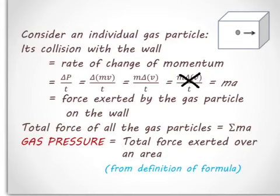And coming back here, the rate of change of momentum can be expressed as ΔP over time, which is Δ(mv) over time. And momentum can be expressed as mass times velocity.